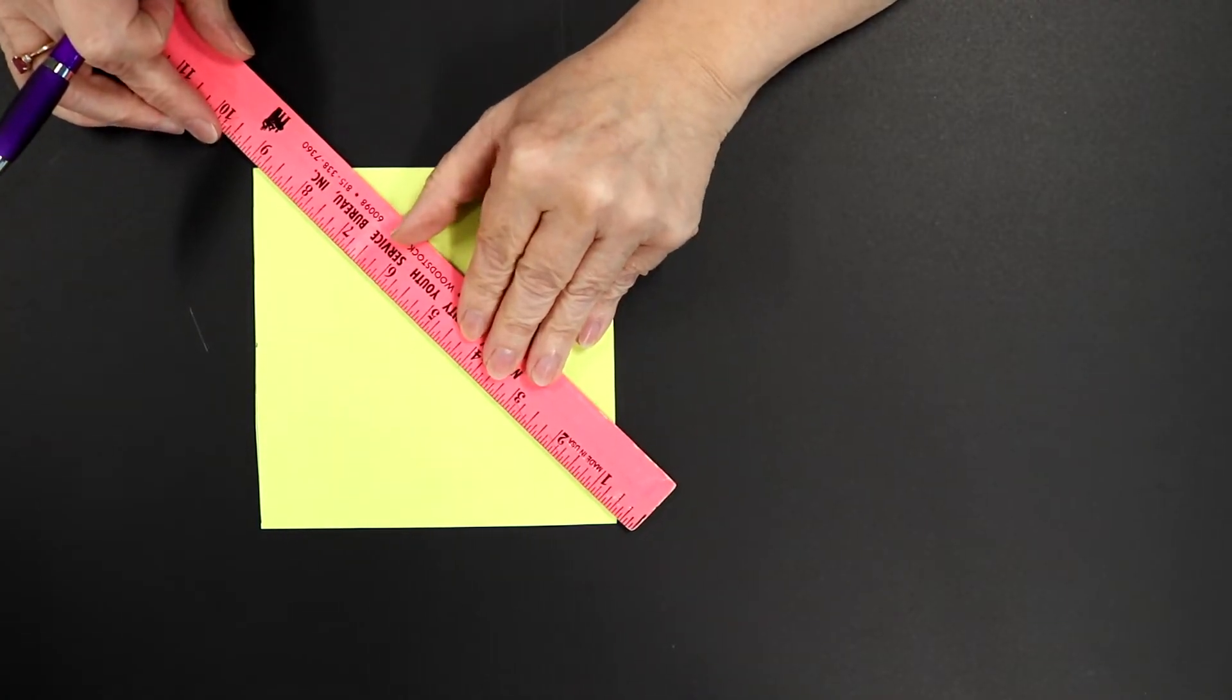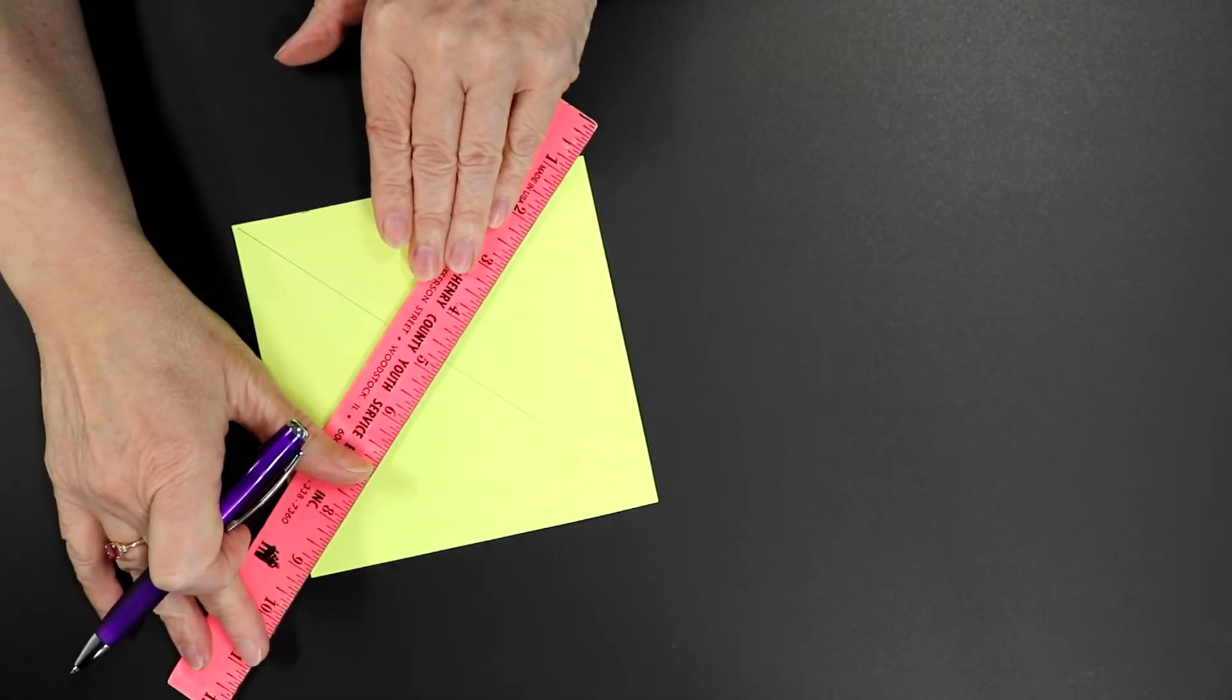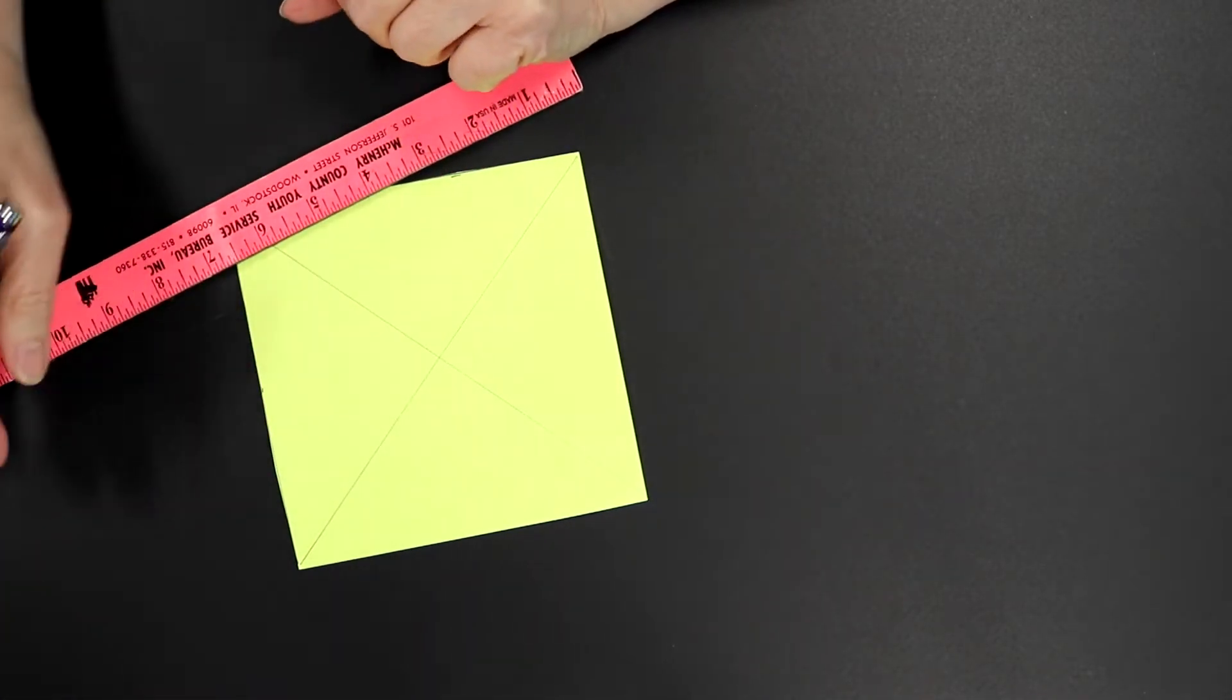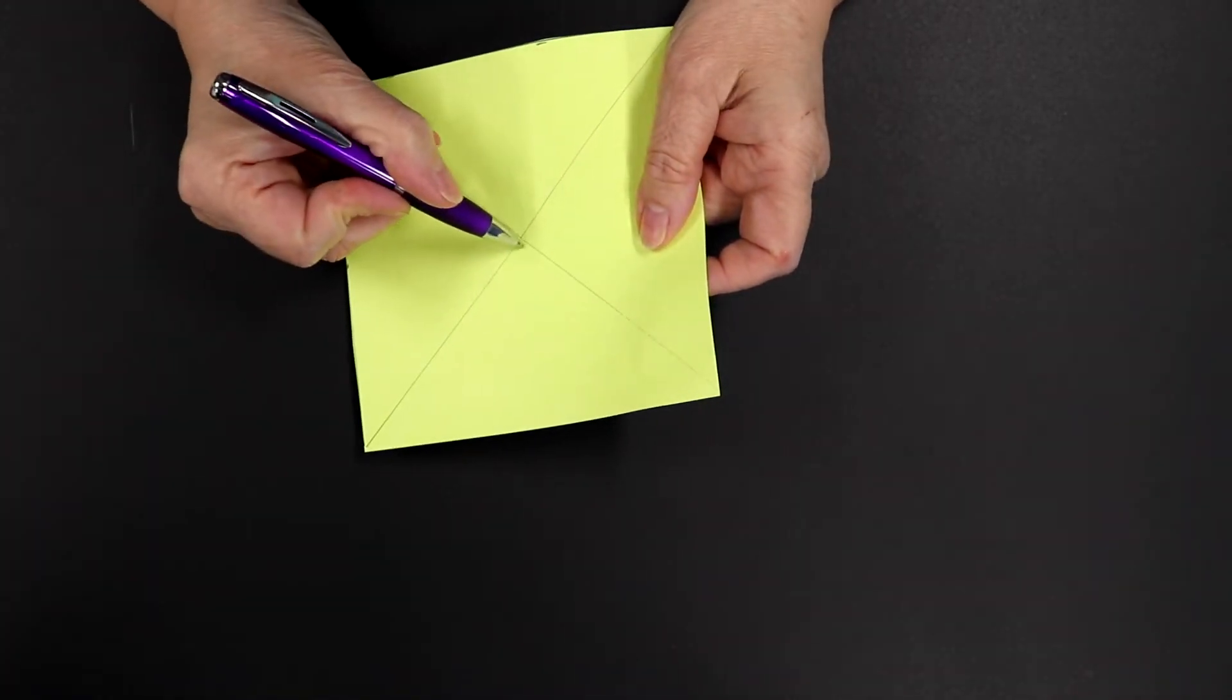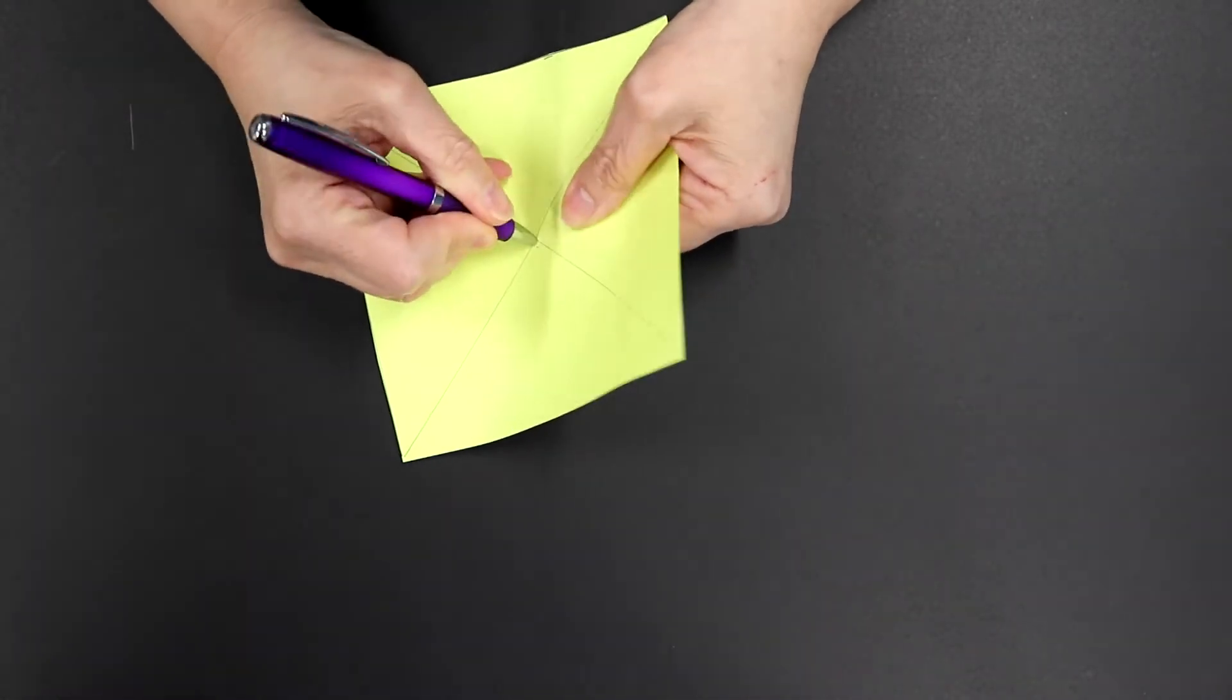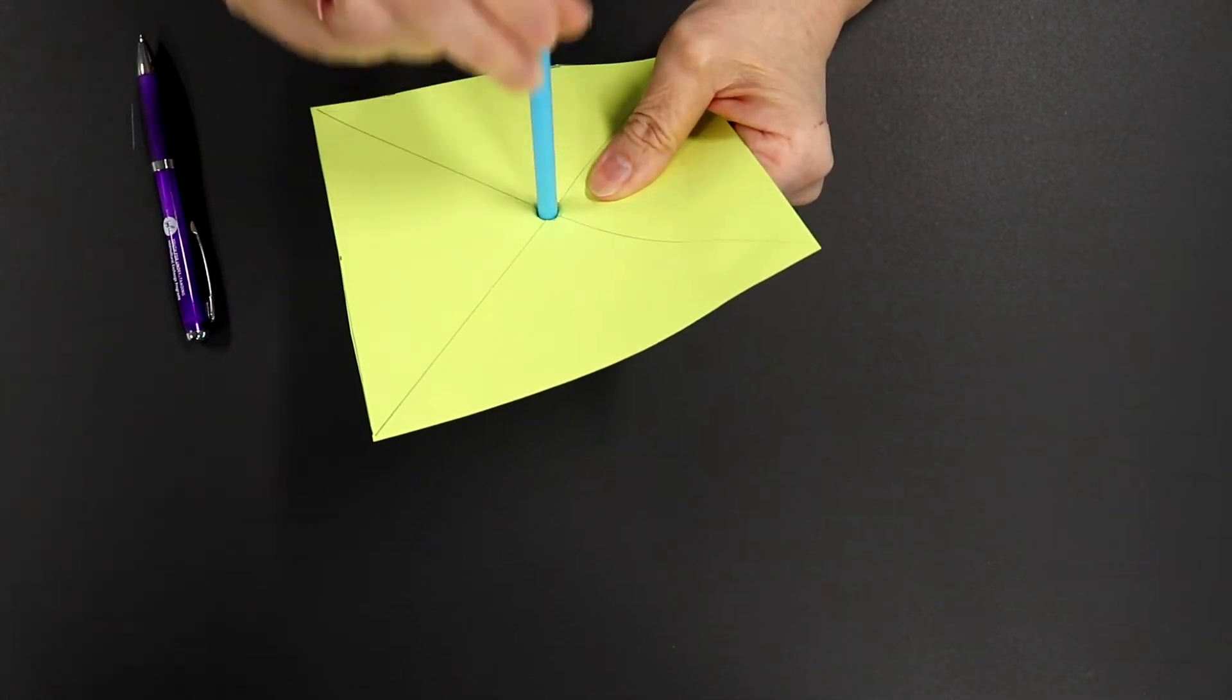Now you're going to draw an X from corner to corner like this. Use your ruler, match up like that. And you're going to do it to your other two pieces of paper too. Now, right here where the two diagonal lines meet, you're going to take your pen or pencil and poke a hole right on that center and push it in to make a hole like that, because it has to be big enough so that your straw can fit in easily.